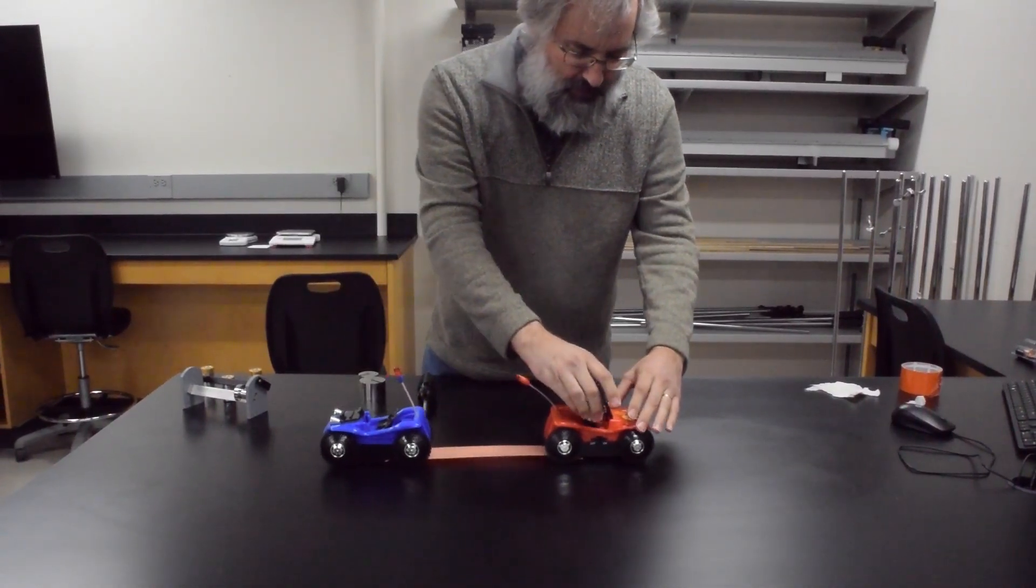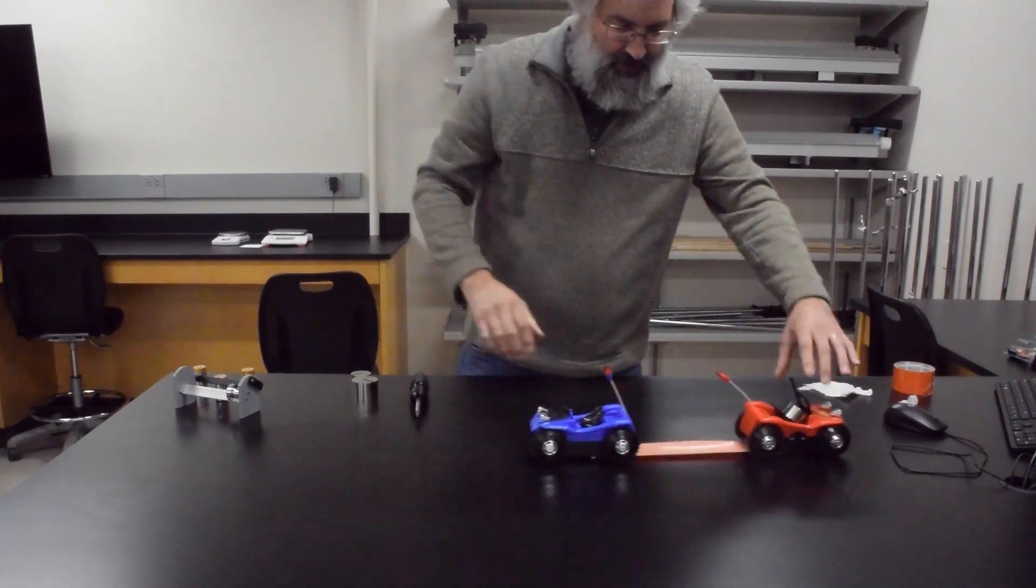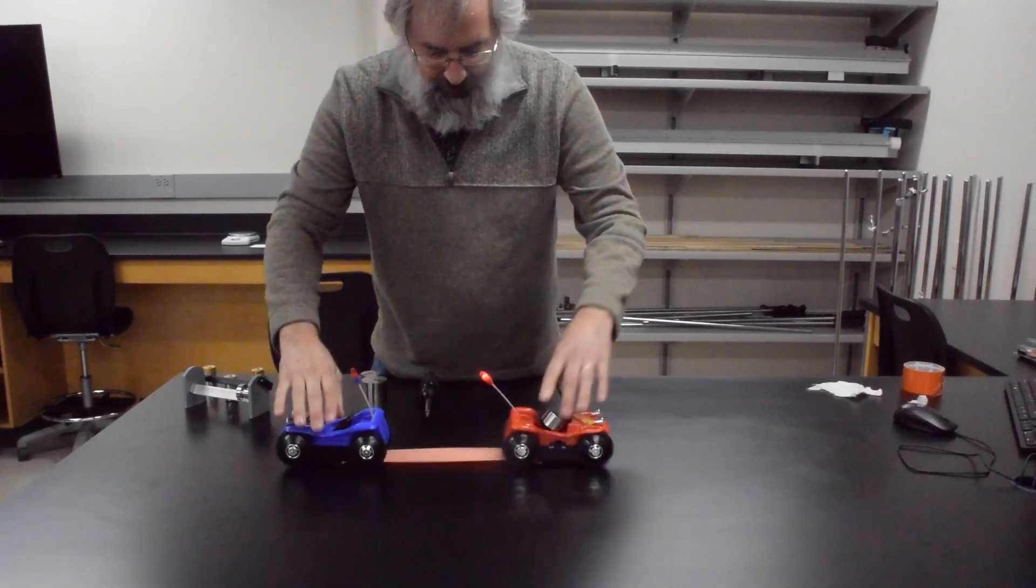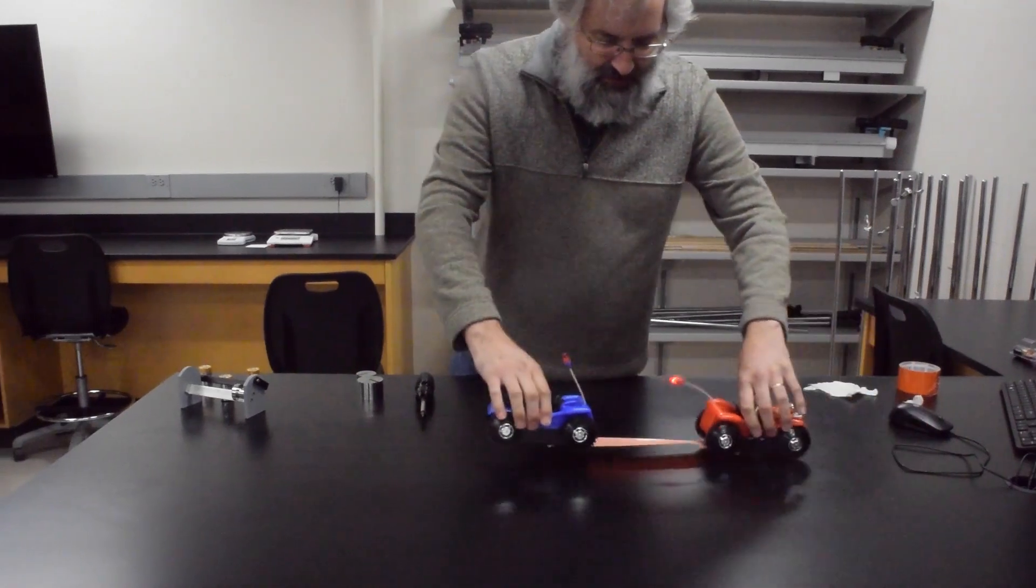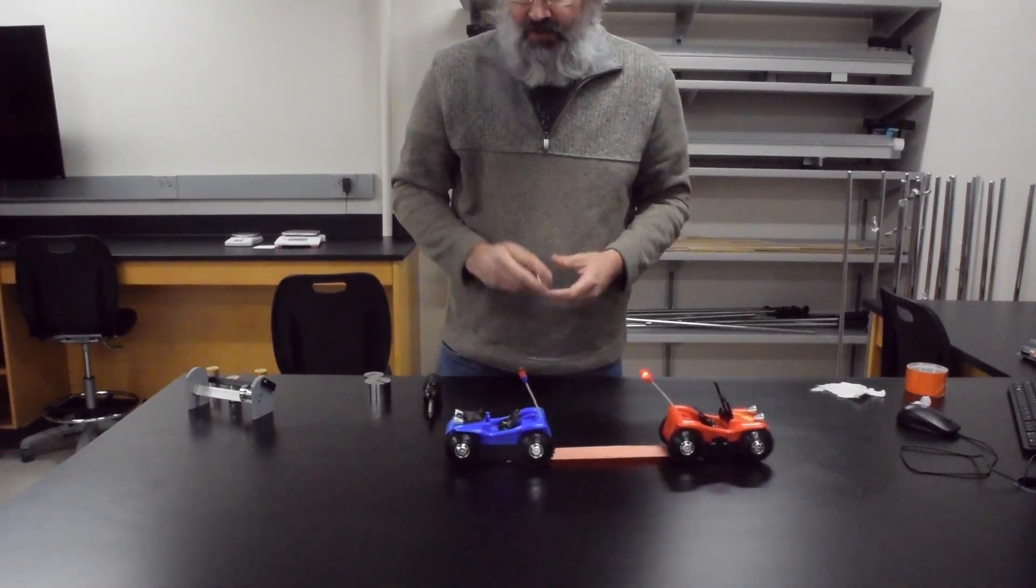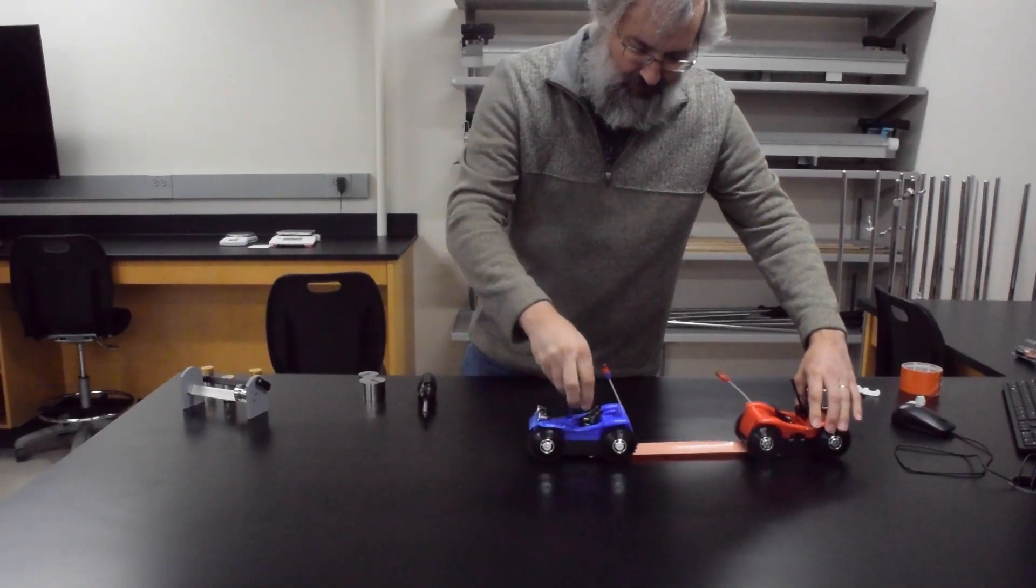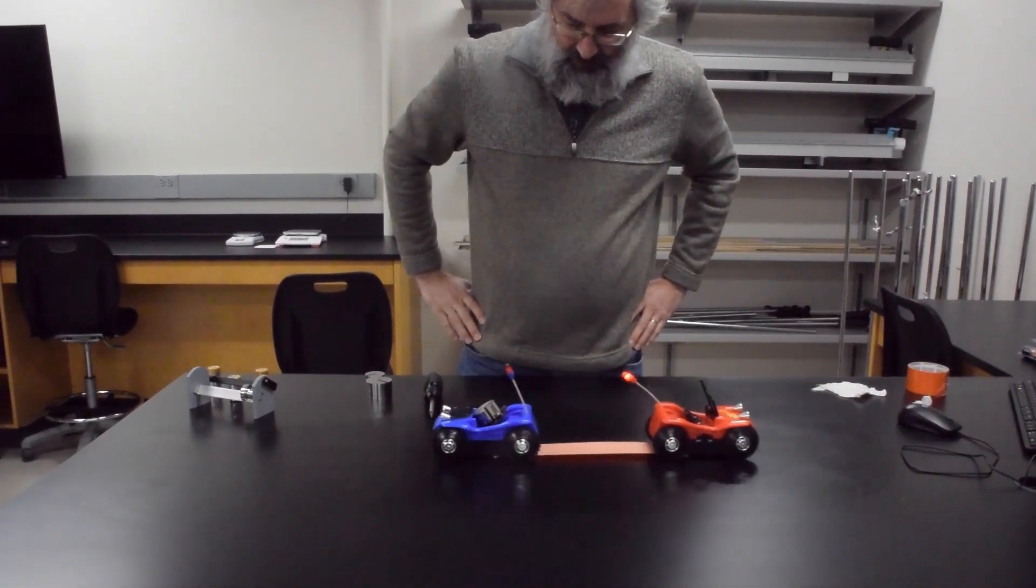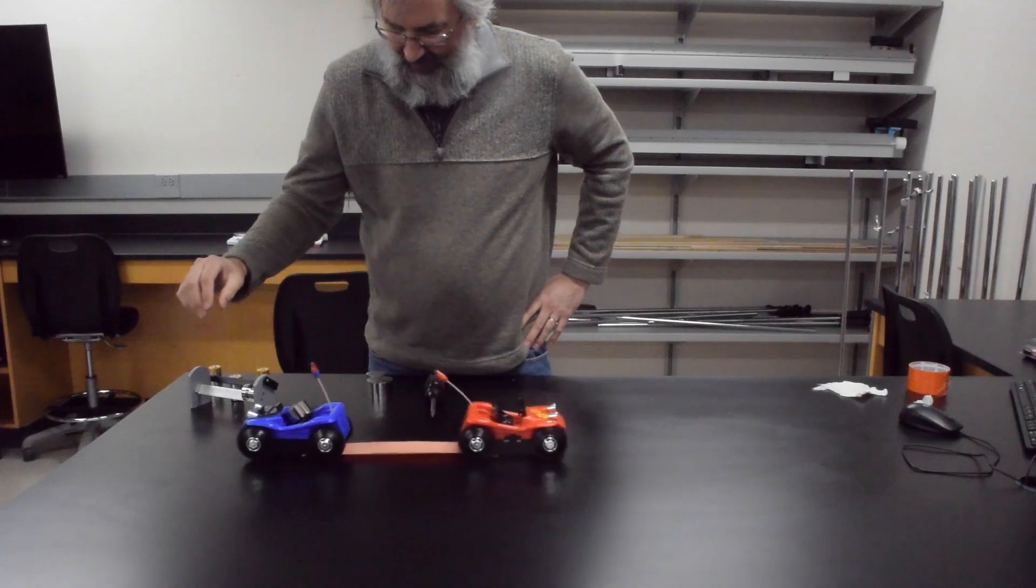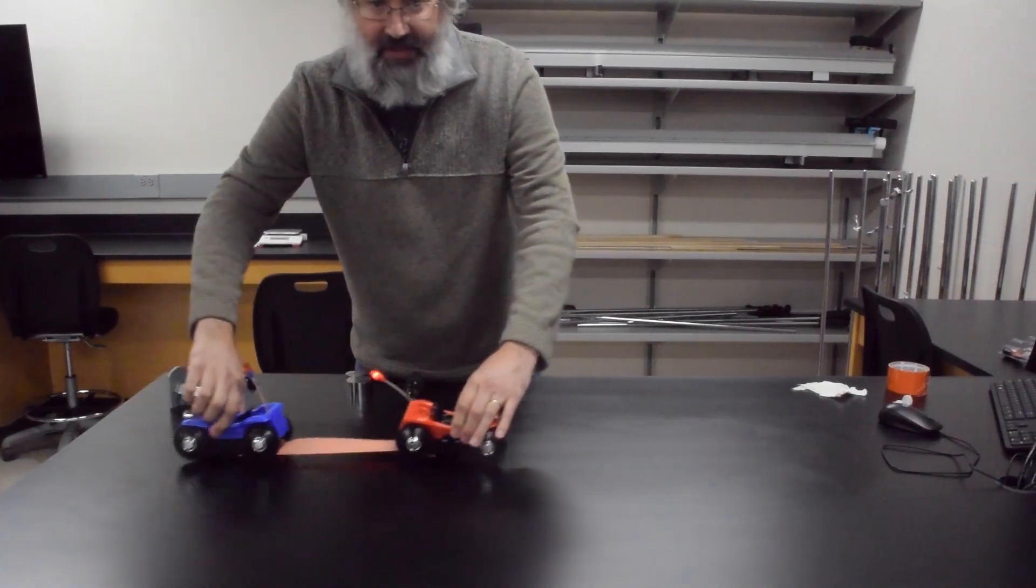If I give the red one some more weight, it gets more friction on the table and it consistently takes off. Now this blue one was very slowly winning. If I give it more weight, it really wins out.